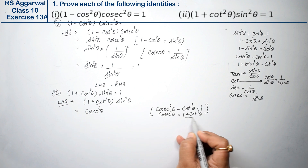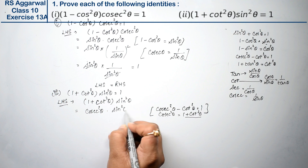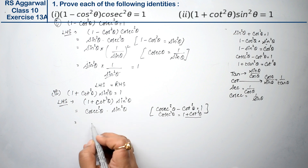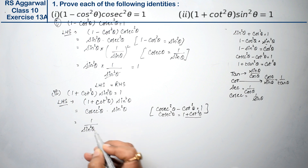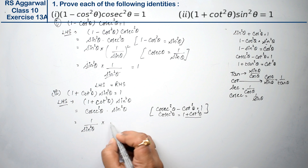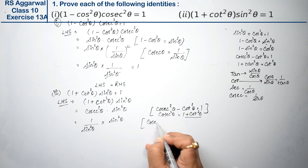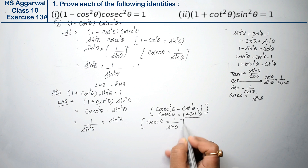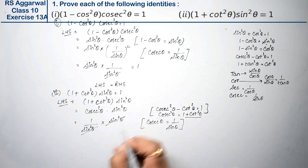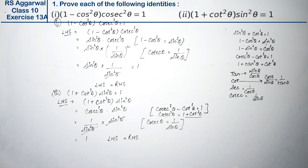So this is 1 plus cot squared theta equals csc squared theta. We have csc squared theta, which equals 1 upon sin squared theta (the whole squared), multiplied by sin squared theta. Why? Because csc squared theta equals 1 upon sin squared theta. Now it cancels out. So what happened? 1. It is proved. Hence, left-hand side is equal to right-hand side.